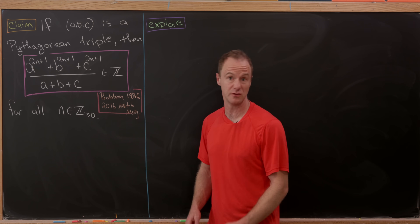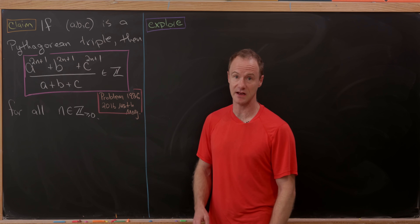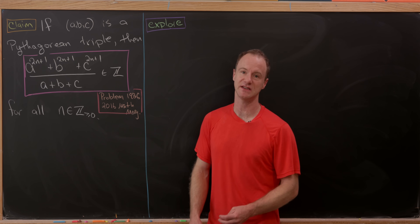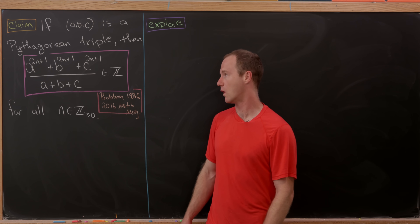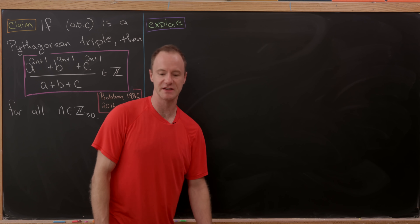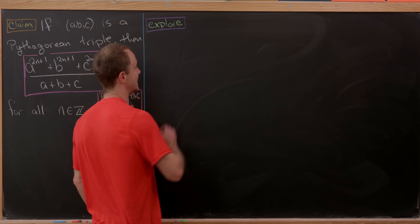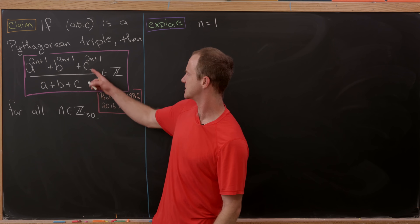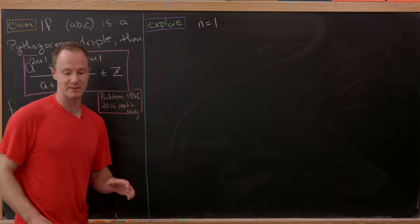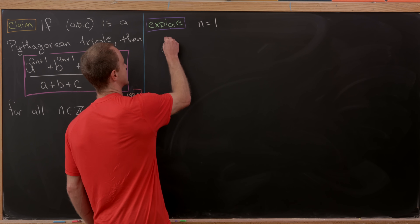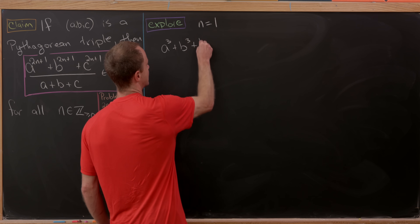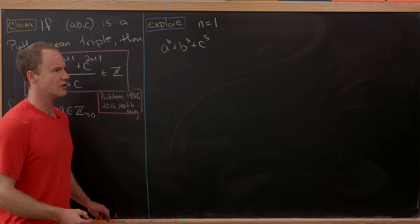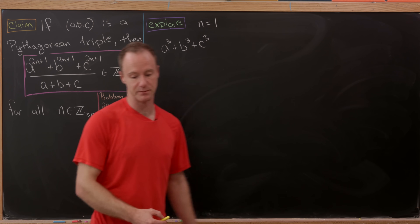This is going to be true for all non-negative integers n. The case when n equals 0 is super boring because we just get a plus b plus c in both numerator and denominator, so the quotient is 1. To get an idea of how this might work, let's explore the next case: n equals 1, which gives us the sum of the cubes in the numerator. So let's look at a cubed plus b cubed plus c cubed.